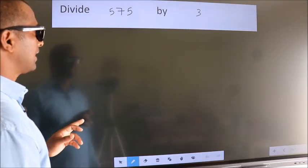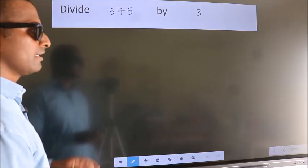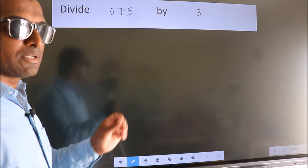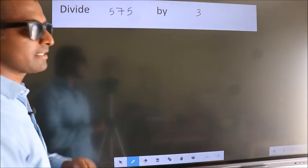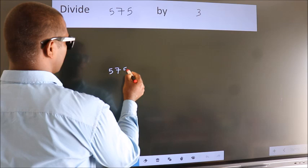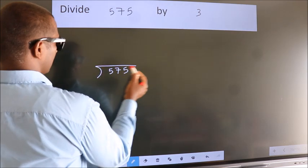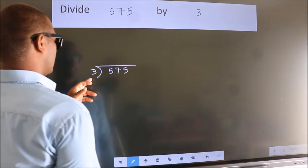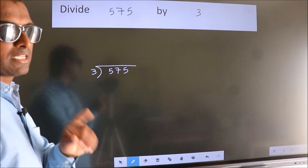Divide 575 by 3. To do this division, we should frame it in this way. 575 here, 3 here. This is your step 1.